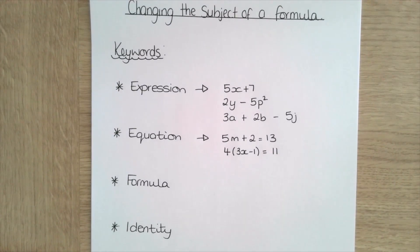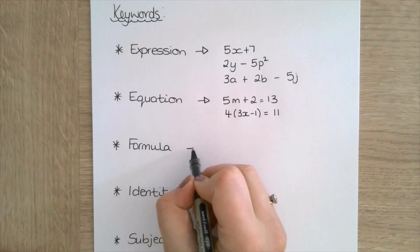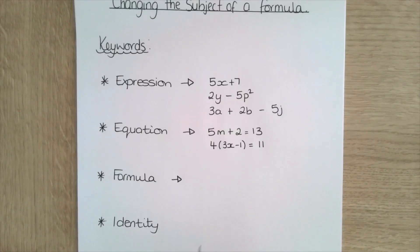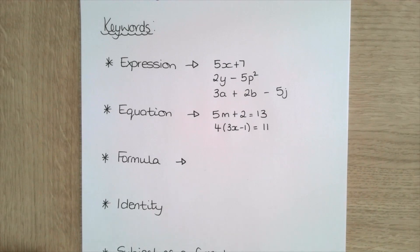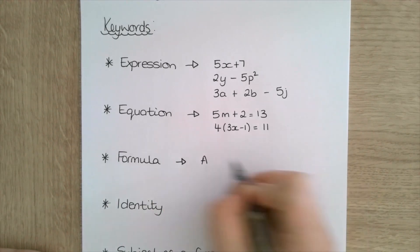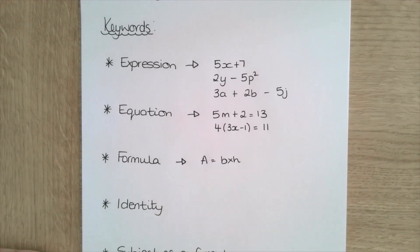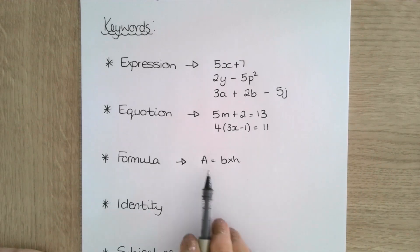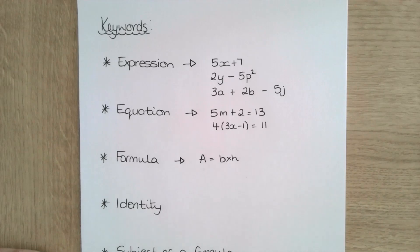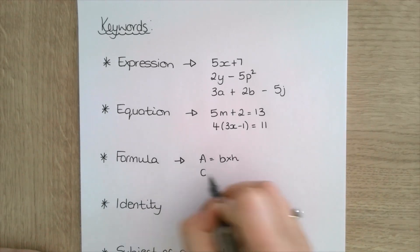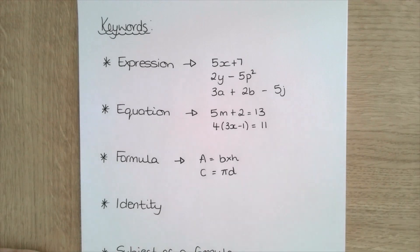A formula — which ties in with our title — is basically a rule that we can use to work something out. Something you've probably seen before is area equals base times height, used to work out the area of a rectangle. A formula involves two or more variables that are equal to something. Another example is circumference equals pi d.